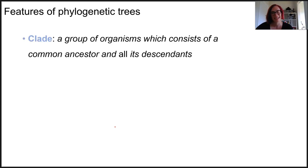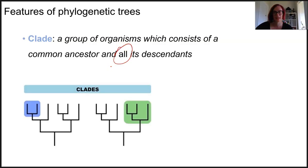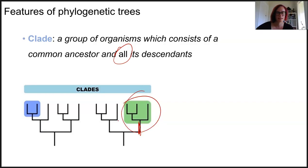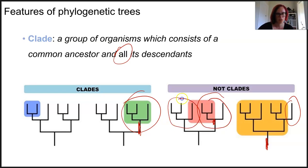Within a cladogram or phylogram, each section of the tree is known as a clade. A clade indicates an ancestor and all of its descendants. These are clades because the common ancestor and all of its descendants are shown. If groups don't include all descendants of the common ancestor, they are not considered clades.